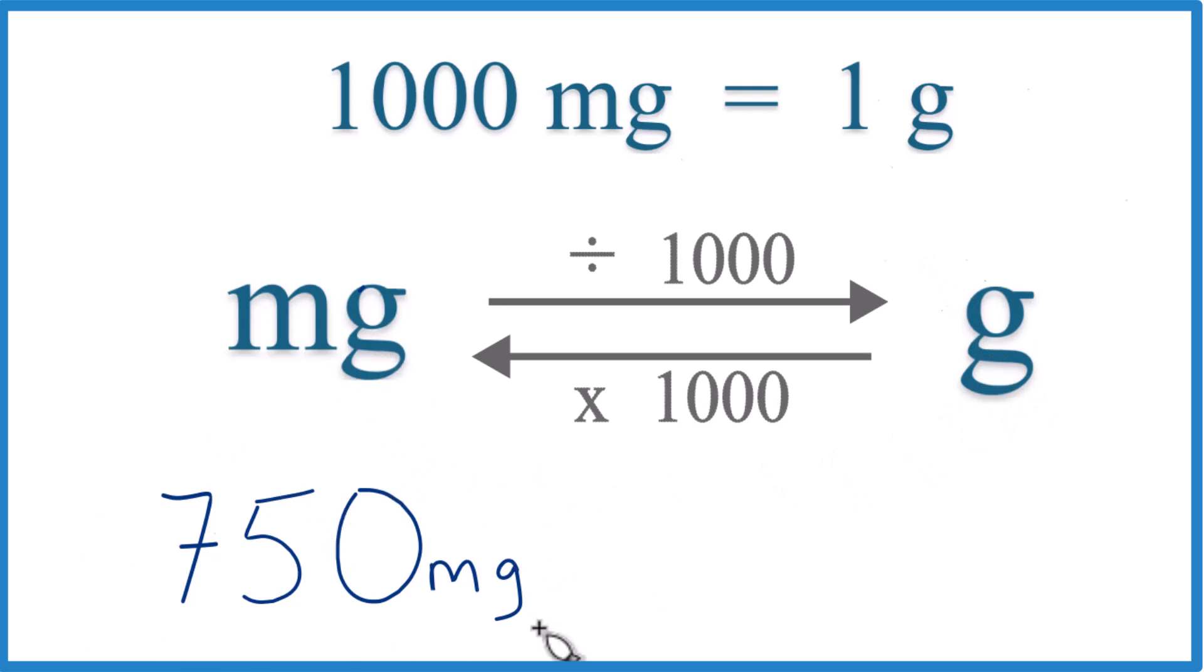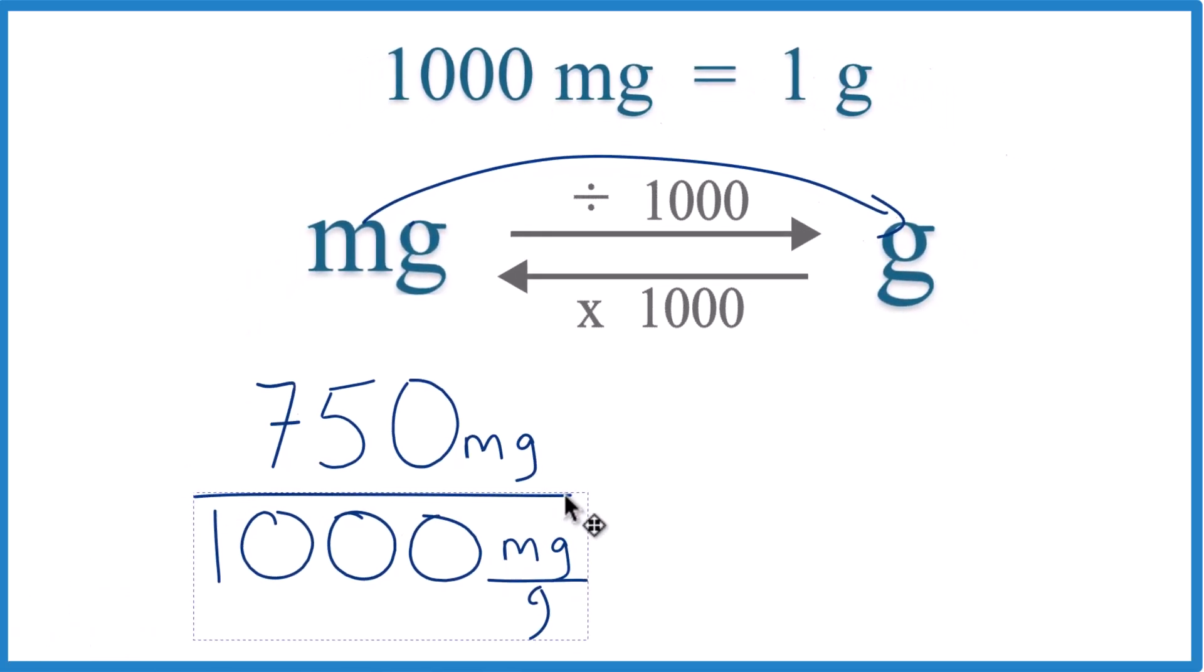Here we have 750 milligrams. So we're going from milligrams to grams. We're gonna divide by 1,000 like this. So essentially we're just taking 750, dividing it by 1,000, that'll give us grams.